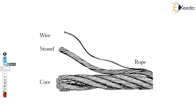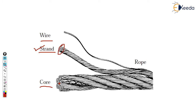Now, looking at the general structure of a rope, there are three main parts: number one is the core, number two is the strand, and number three is the wire. The core is the center part of the rope. The strands are the twisted, easily separated parts when you open any rope. In each strand, there is a combination of wires.